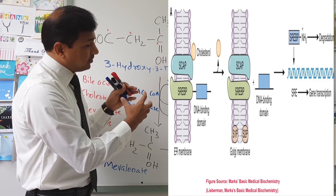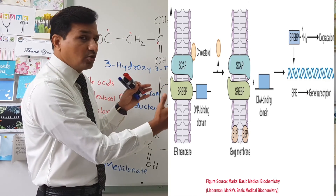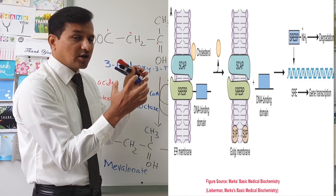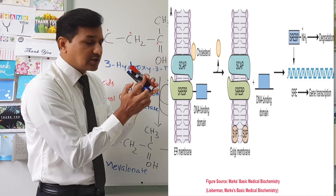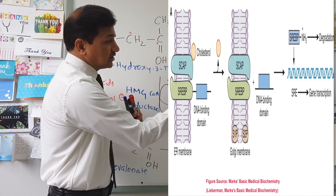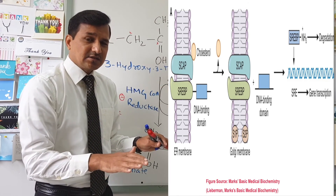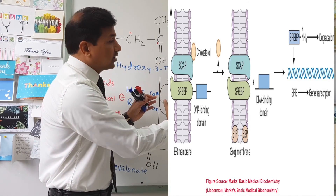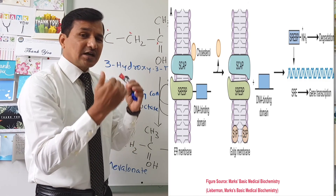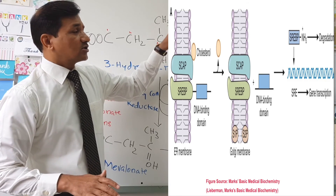Because for SREBP's DNA binding domain to move into the nucleus and bind to the SRE on DNA, it has to move from the endoplasmic reticulum into the Golgi and then into the nucleus. Whenever there is more cholesterol, cholesterol ensures these two proteins remain in the endoplasmic reticulum and do not move on. This means gene transcription does not proceed, synthesis of HMG-CoA reductase enzyme decreases, and cholesterol synthesis goes down.